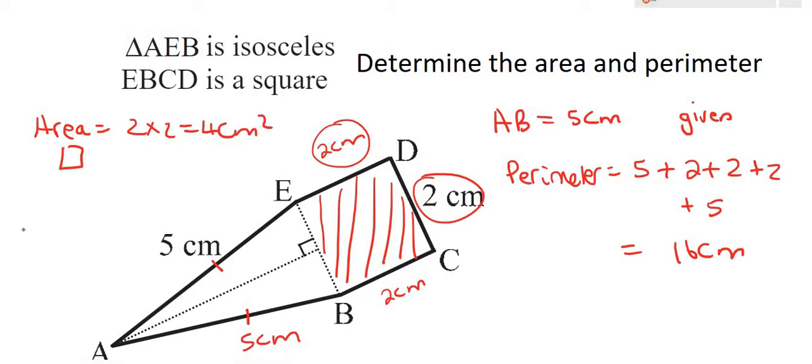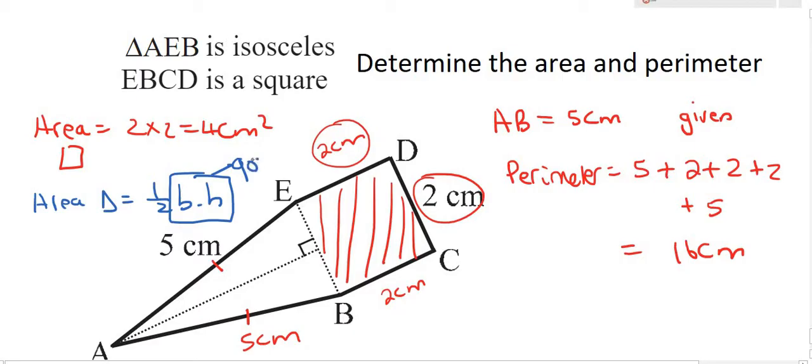Now let's have a look at the area of the triangle which we know is a half base times height. And we always say this, the base and the height must always be 90 degrees to each other. So the base of the triangle we could take that as EB and then which line would we use?